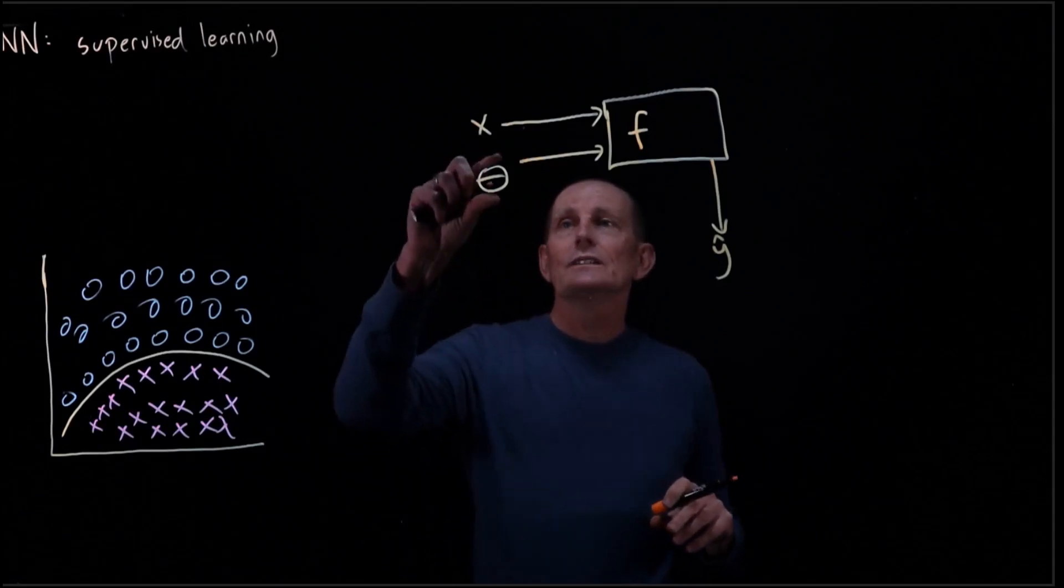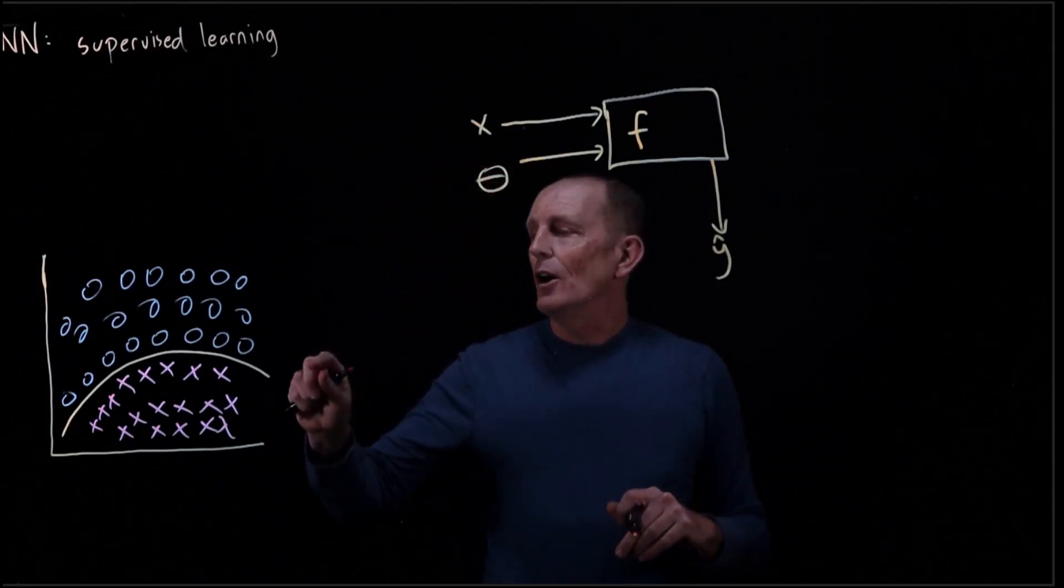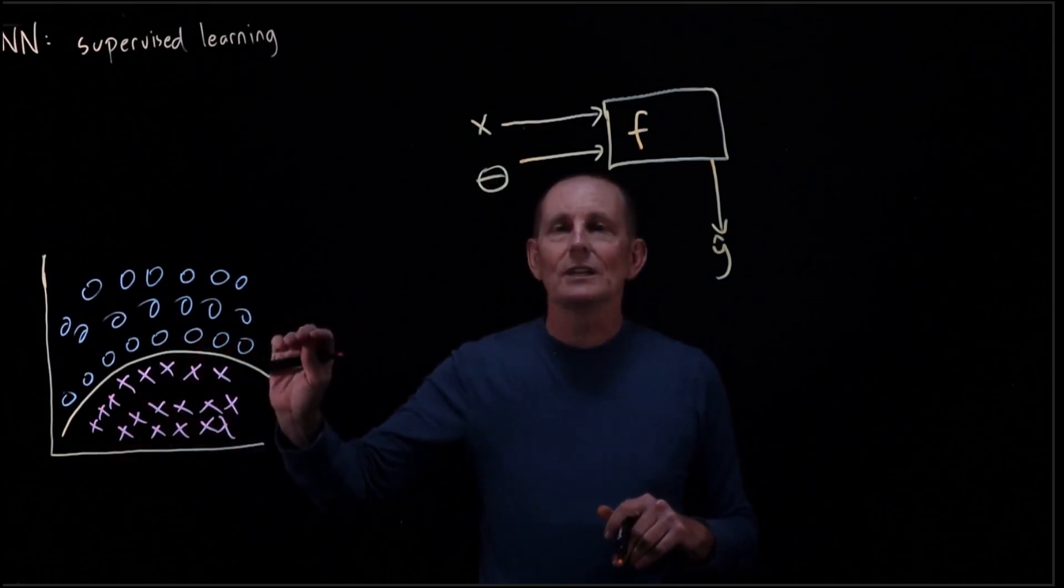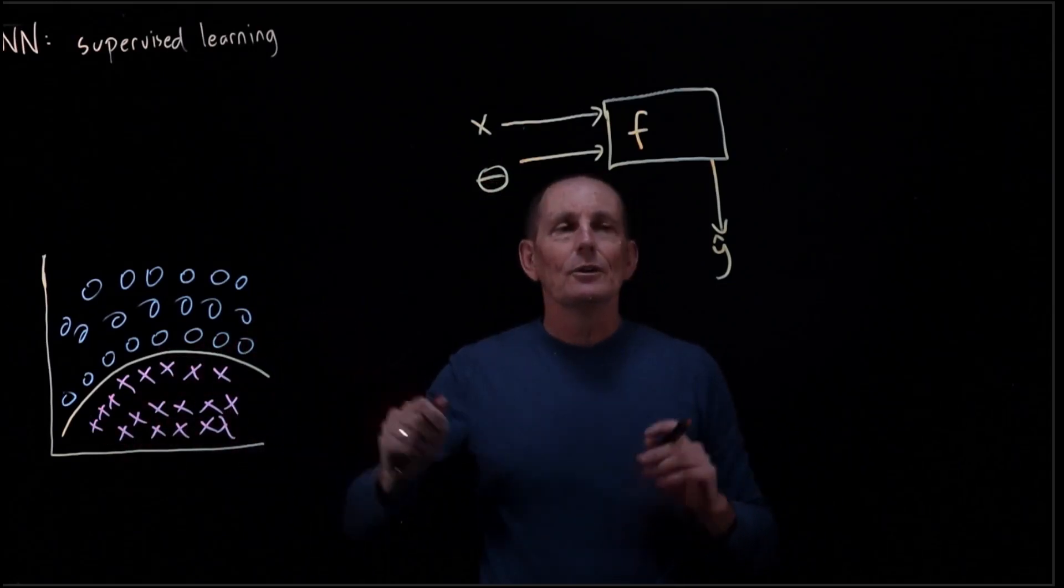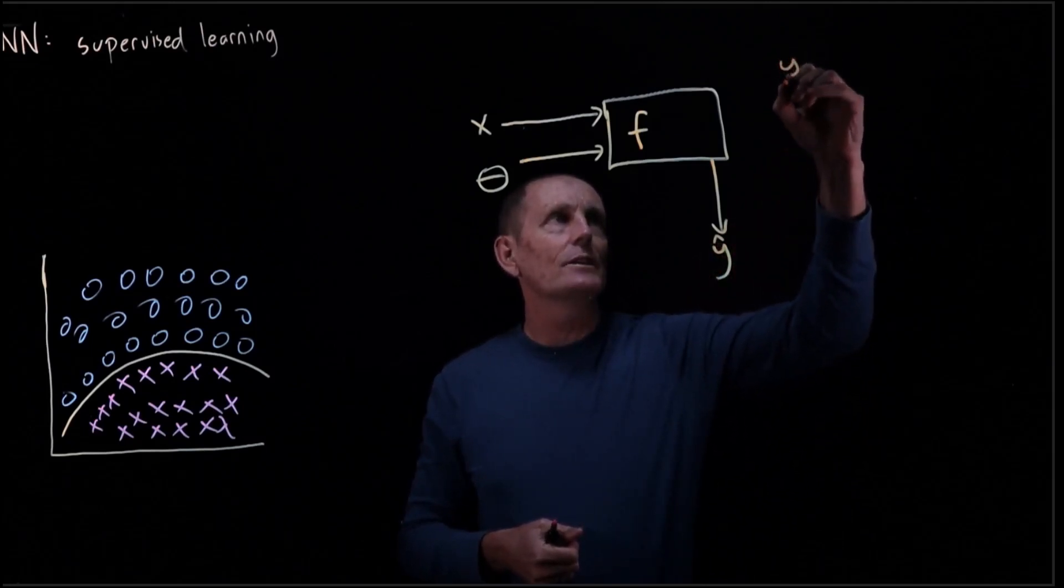So it is our estimated output rather than our known good output. Our goal is going to be to try and come up with good thetas, thetas that are the best approximation we can get to determine Y-hat that's close to Y. So the other input we have here is Y.